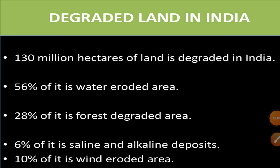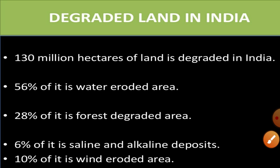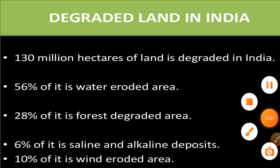About 130 million hectares of land in India is degraded: 56 percent is water-eroded area, 28 percent is forest-degraded area, 6 percent has saline and alkaline deposits, and 10 percent is wind-eroded. In the next module we will discuss the six major soil types and their conservation. Thank you.